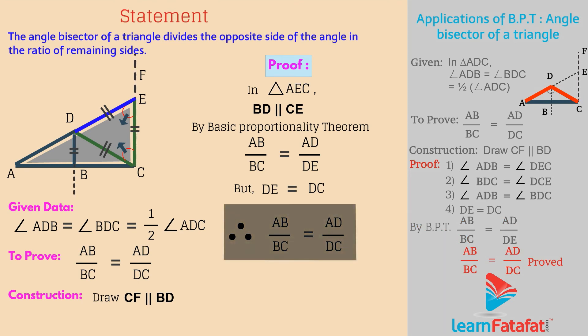Hence, the angle bisector of its angle divides the opposite side of the angle in the ratio of remaining sides.